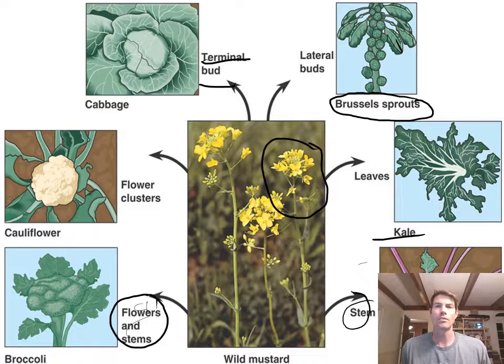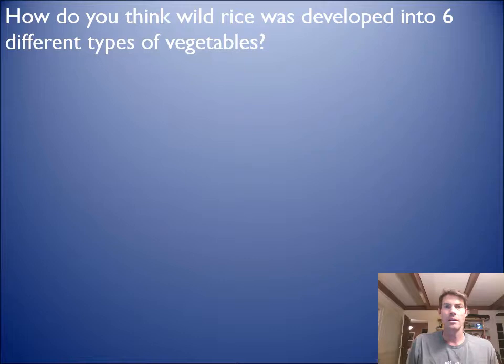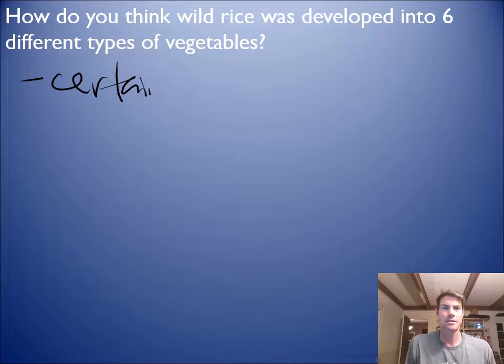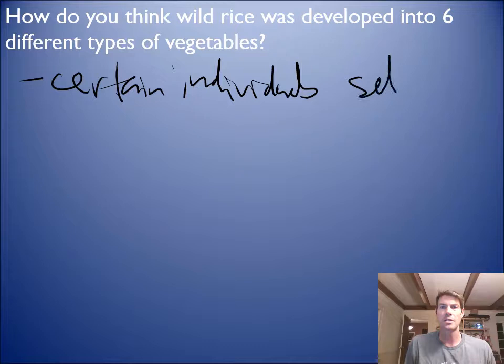And this is with humans acting over decades, which isn't a long time — think about how old the earth is. So how do you think wild rice would develop? Certain individuals, selected based on their physical properties.